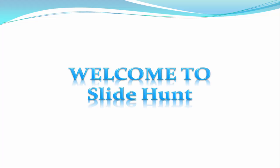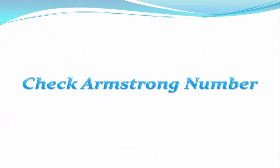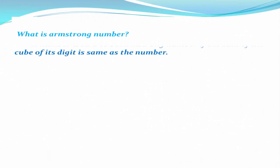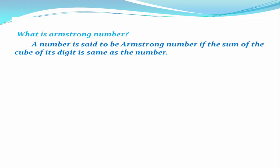Hello friends, welcome to Slide Hunt C programming video tutorial. In this tutorial I am going to tell you about a special type of number called an Armstrong number. First, let's understand what an Armstrong number is. A number is said to be Armstrong if the sum of the cube of its digits is the same as the number itself. Suppose you are given a number, say 153, and you have to determine whether it is an Armstrong number or not.